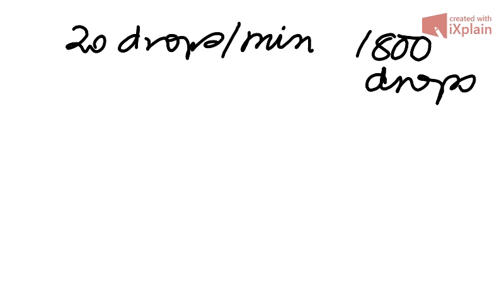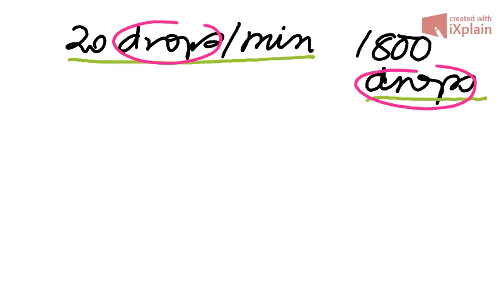Well, same thing as before. I have here one ratio, one rate, and I have here another piece of information. These are connected by the drops. So I can start the box again.